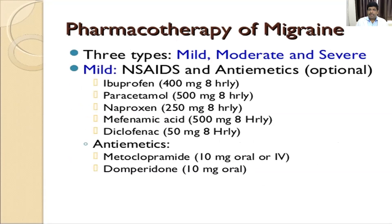There can be mild, moderate, or severe migraine. In mild form, analgesics and antiemetics can be given; antiemetics may not be needed in mild type since nausea and vomiting are typically absent. Among analgesics, ibuprofen, paracetamol, naproxen, mefenamic acid, or diclofenac can be given — paracetamol is usually preferred because of its safety. Antiemetics like metoclopramide or domperidone can be chosen.